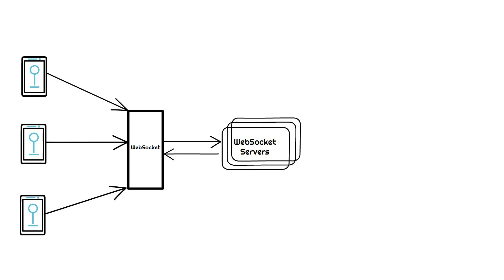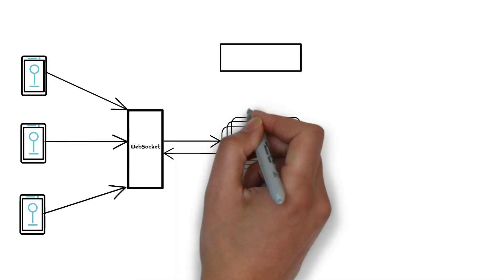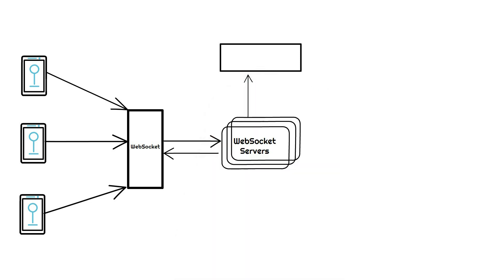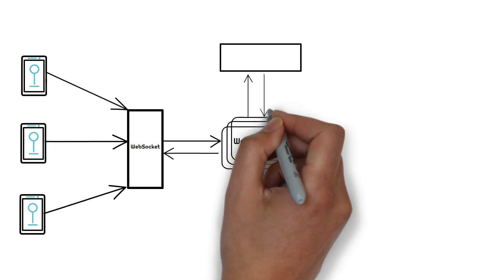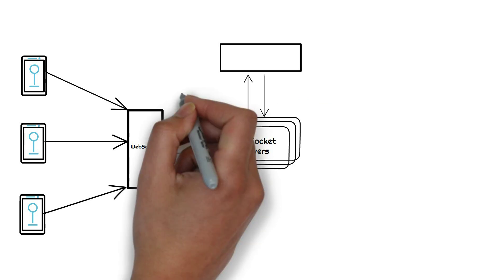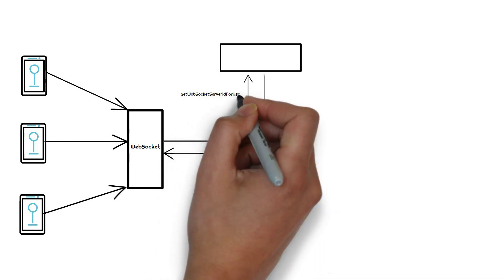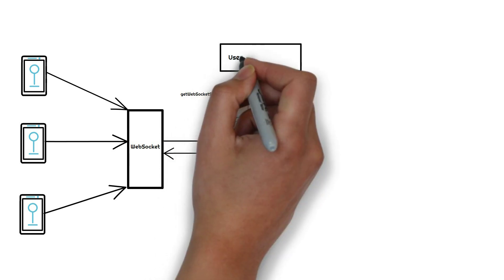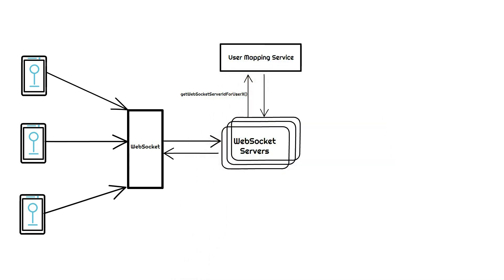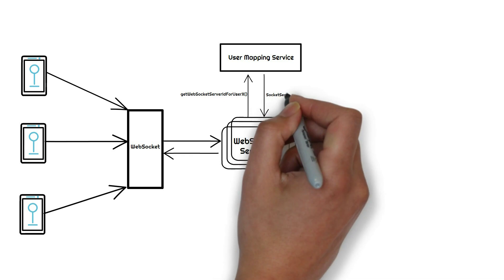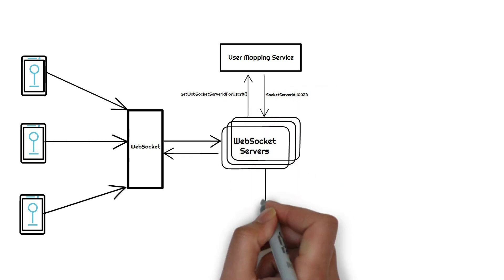For that purpose, we need a service that returns the socket server ID for a given user. If there is already an open connection with another server, we should use that connection and not create a new one. So there will be a user mapping service that returns the socket server ID for an already open connection.